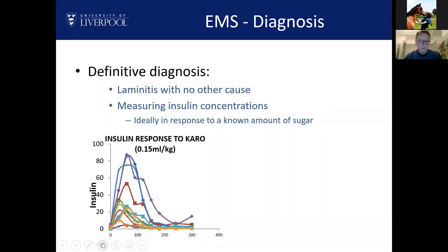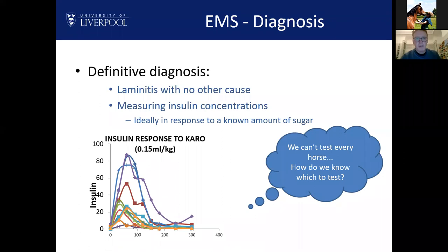We have cutoffs for the Karo syrup test. A horse with a very low insulin response is at very low risk of EMS and laminitis. Those with very high insulin responses can be definitively diagnosed with EMS and are at higher risk of laminitis. Horses in the middle are in a gray zone — a moderate response — and you'd implement management changes or monitor carefully. We can't test every horse for financial or practical reasons.